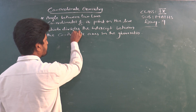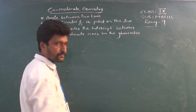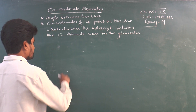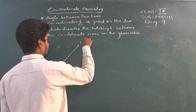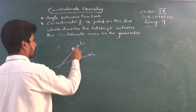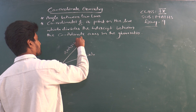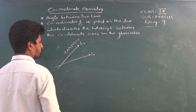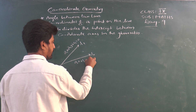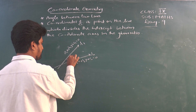That point divides the intercept between the coordinate axis in the given ratio. How do we find the angle between two lines? Suppose there are two lines, L1 and L2. The equation of the first line is a1x + b1y + c1 = 0, and that of the second line is a2x + b2y + c2 = 0. Let us suppose θ is the angle between these two lines.